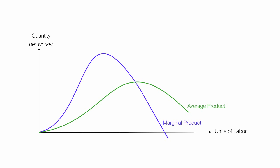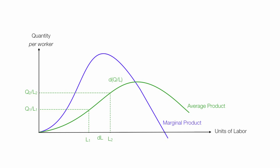Now let me show you a little bit more. If I have L1, I want to know the slope of the average product curve. I need two points — L1 and L2 — which gives me two different average quantities. I want to know the change in average product. So I'm going to take the change in average product divided by the change in labor, which is the slope of the average product curve at any particular two points. This is the change in average product due to a small change in labor.